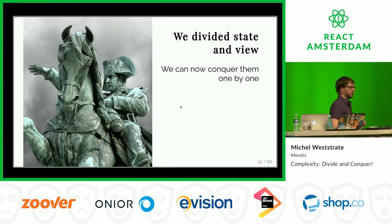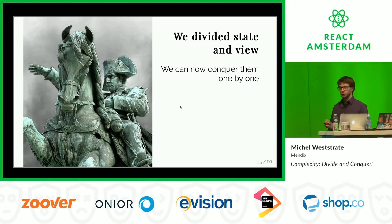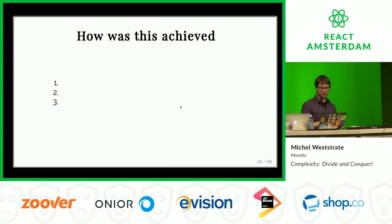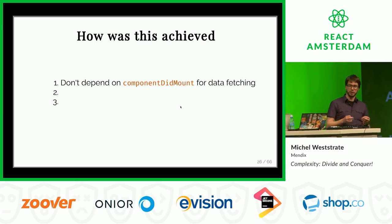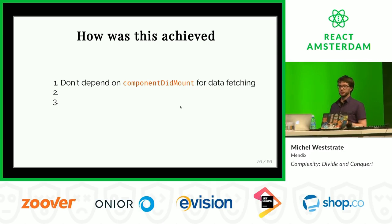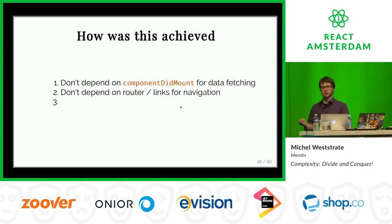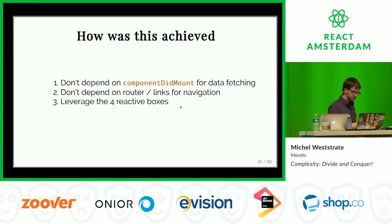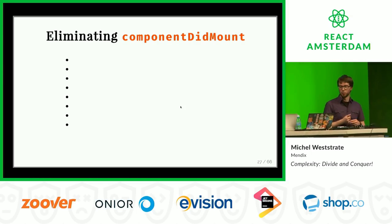That proves we can divide state and view entirely, and solve those problems one by one. So how was this done? Why is the application working? The most important thing is that you cannot depend on component lifecycle hooks anymore to do your data fetching - if there's no component, there's obviously no data fetching. You also can't rely on clicking links to navigate and put your application in a new state.